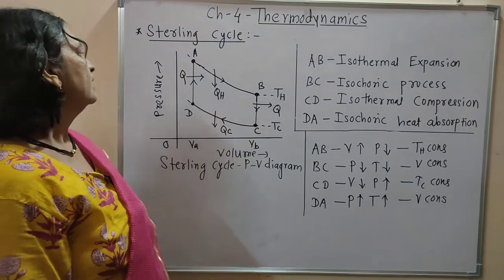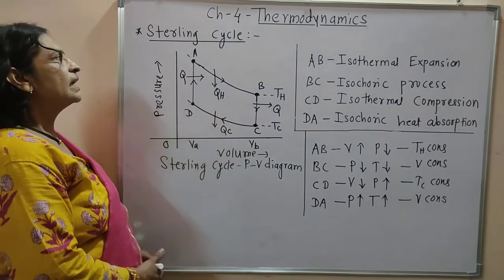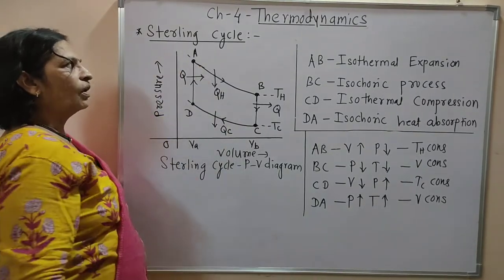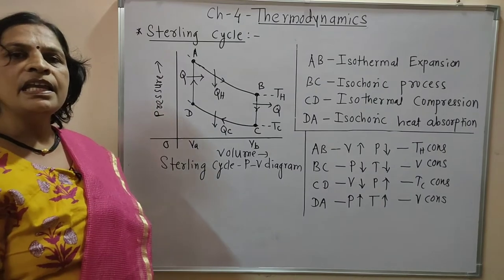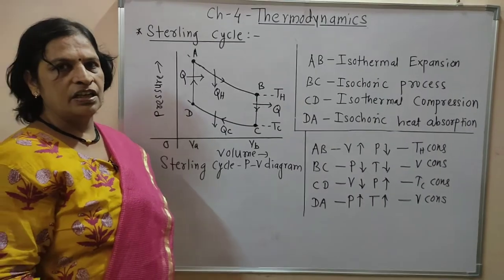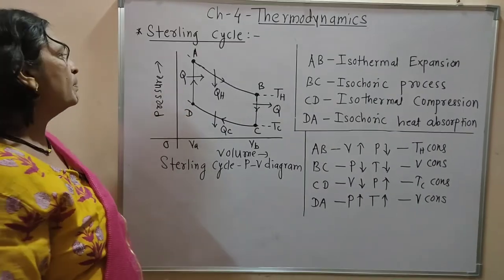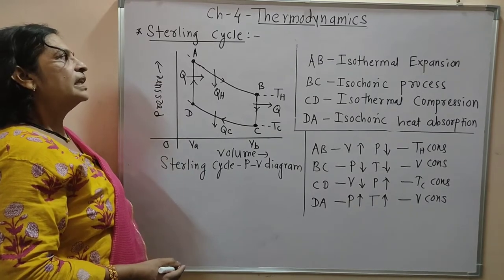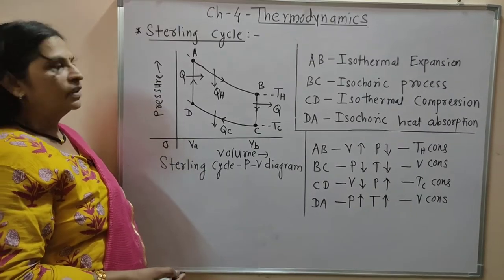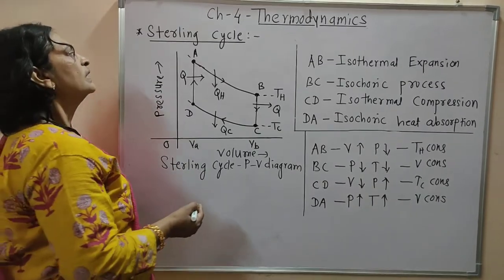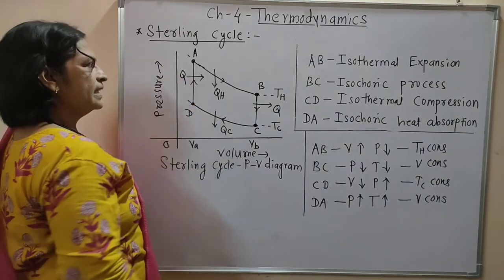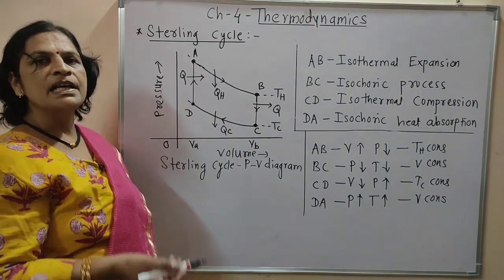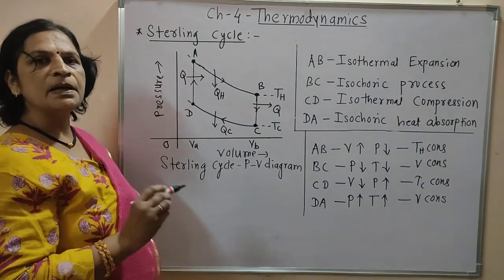In this lecture we will study about the Stirling cycle and the difference between the Stirling cycle and Carnot cycle. This Stirling cycle is based on a Stirling engine and it was proposed by Stirling in 1816. The Stirling cycle is a reversible cyclic process.